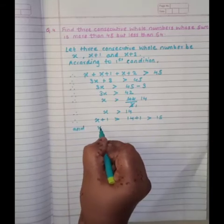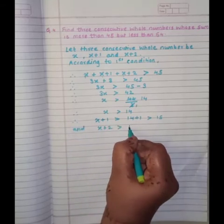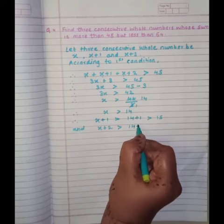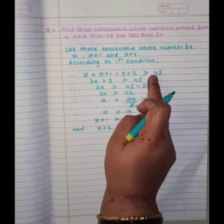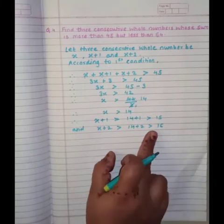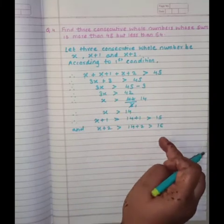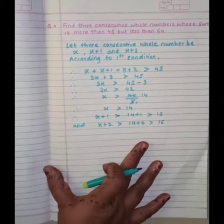And X plus 2 is more than 14 plus 2 is more than 16. So when the sum is more than 45, we will get the answer 14, 15 and 16.